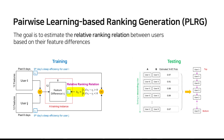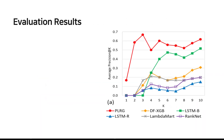We propose Pairwise Learning Based Ranking Generation, or PLSR, which can effectively rank users so that individuals with high insomnia risk can be identified. These are the evaluation results reporting top K-ranked insomnia users. PLSR leads to the highest precision scores, especially when K is less than 6, and outperforms state-of-the-art learning-to-rank models.